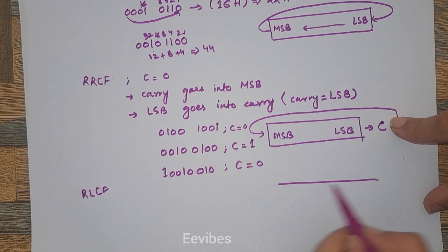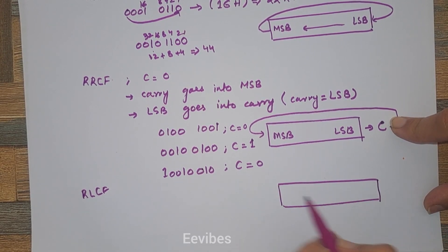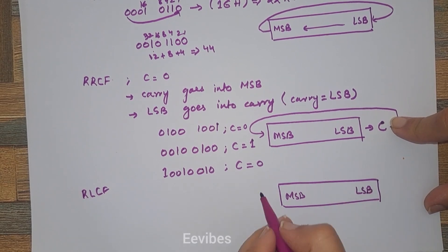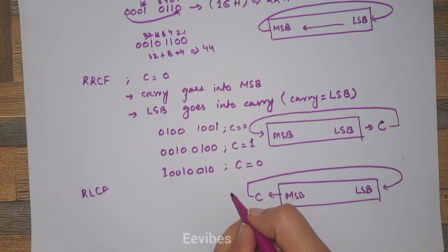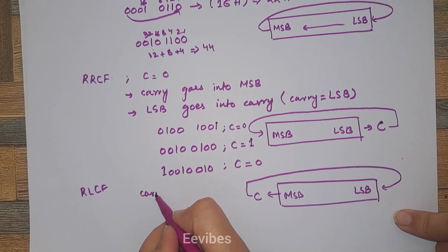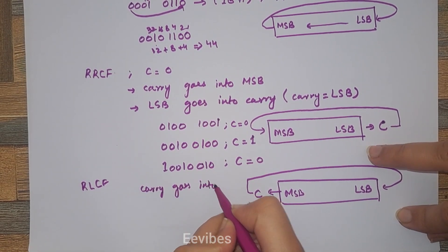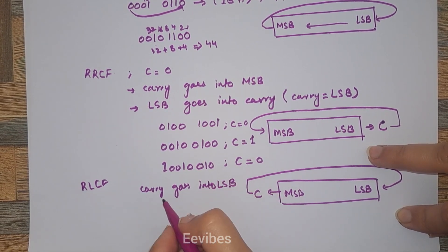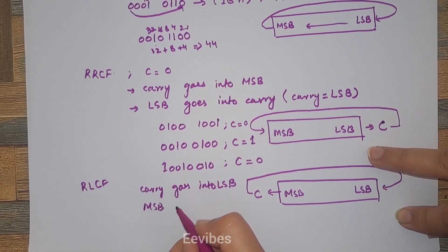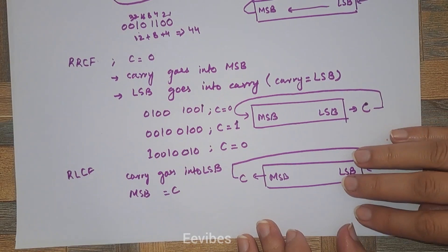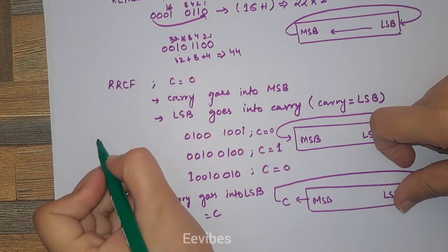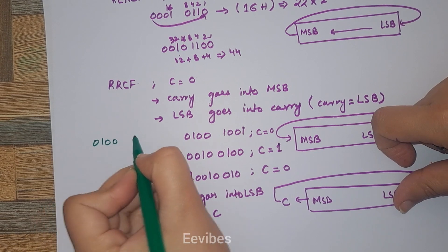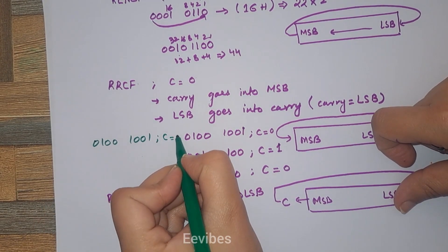The last instruction is rotate left through the carry. In this instruction, MSB goes into carry and the previous carry is copied at the position of LSB. Carry goes into LSB first, then MSB is copied into carry. Let's say we are having 0100 1001 while carry is equal to 1.